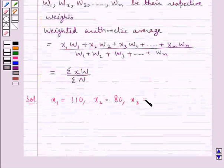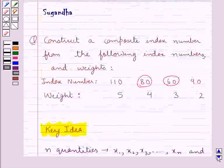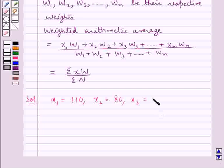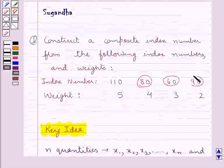then x₃ equals the third index number given which is 60, and x₄ is the fourth index number given to us which is 90.